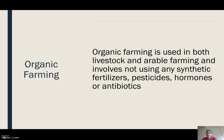Organic farming is the idea of doing livestock or arable farming without using any synthetic fertilisers, pesticides, hormones, or antibiotics — nothing artificial gets used.